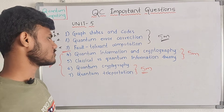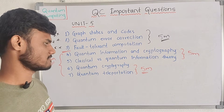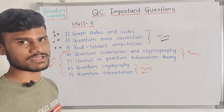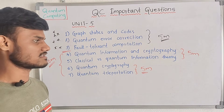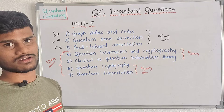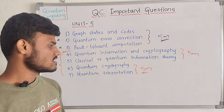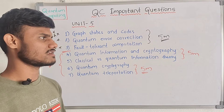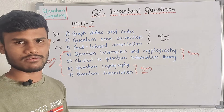Now let's discuss the second topic: quantum information and cryptography. This is also a small concept. Here, quantum cryptography — these two are similar questions, but if you mix these two it's going to be 10 marks. You can learn them as a single answer. Classic versus quantum information theory — classic information theory versus quantum information theory — means differences. Next, the last thing: quantum teleportation. This is two questions — similar concepts. If you mix these two, you can get one answer.